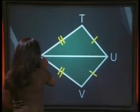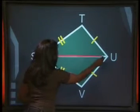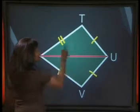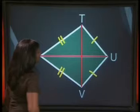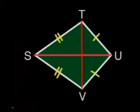Well, SU is one diagonal and if we join T to V, that would be the other diagonal. Now do you see that both these diagonals lie on the inside of the shape? That's what makes it convex.